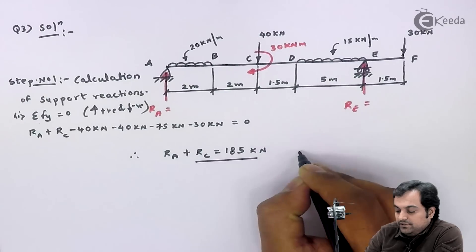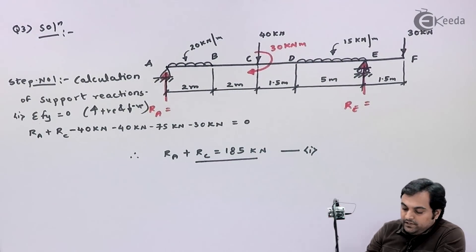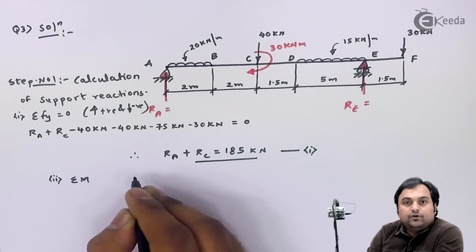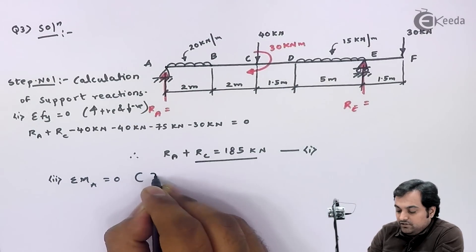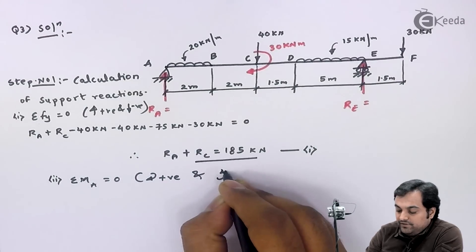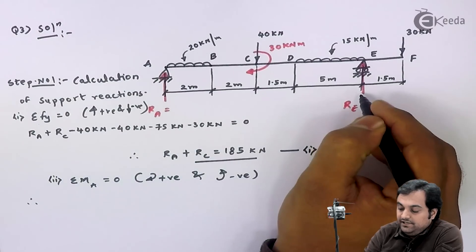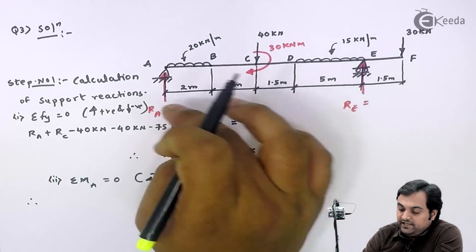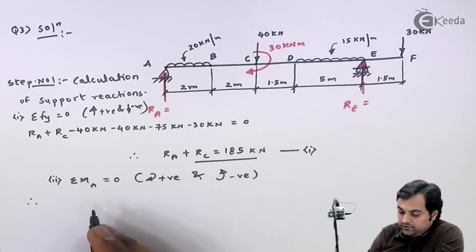After this, sum of moments of all forces about point A equals 0, where I'll take clockwise moment positive and anti-clockwise moment negative. So I have RE, reaction at E, times the distance between A and E, that's 10.5, so minus RE into 10.5.